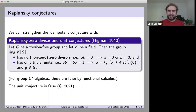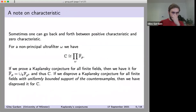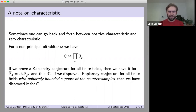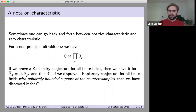I'd like to take a couple of minutes to make some observations about the role that characteristic plays. There are some situations where we can move back and forth between positive characteristic and zero characteristic. One way to formulate this is in terms of ultraproducts. Suppose we have a non-principal ultrafilter on the set of primes; we can actually realize the complex numbers as an ultraproduct of algebraic closures of 𝔽_p.